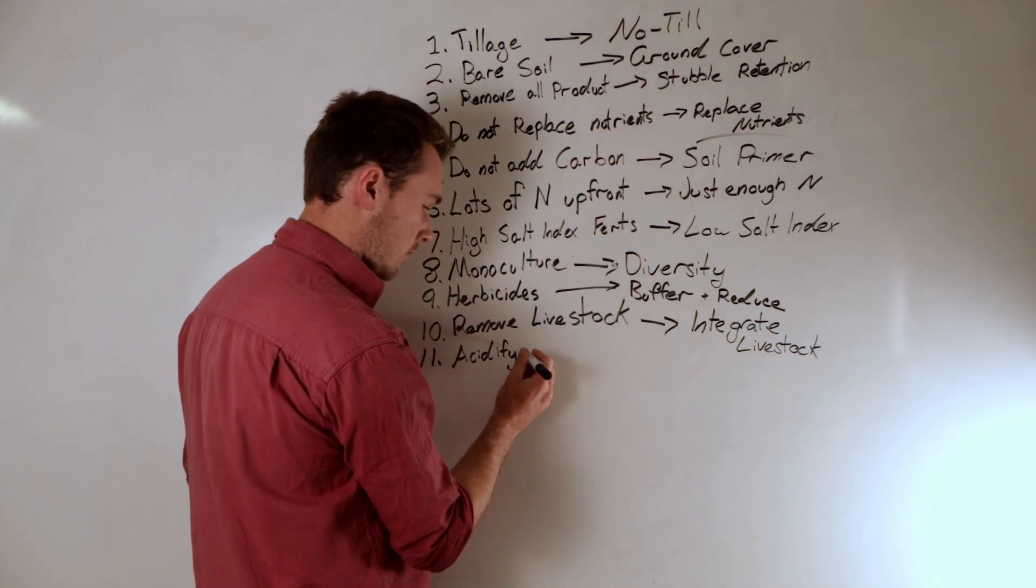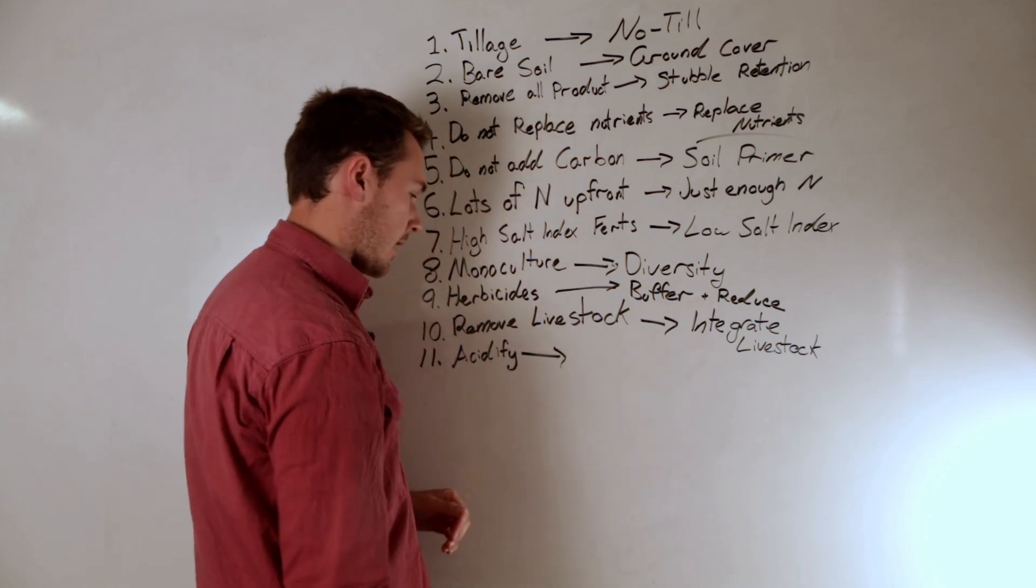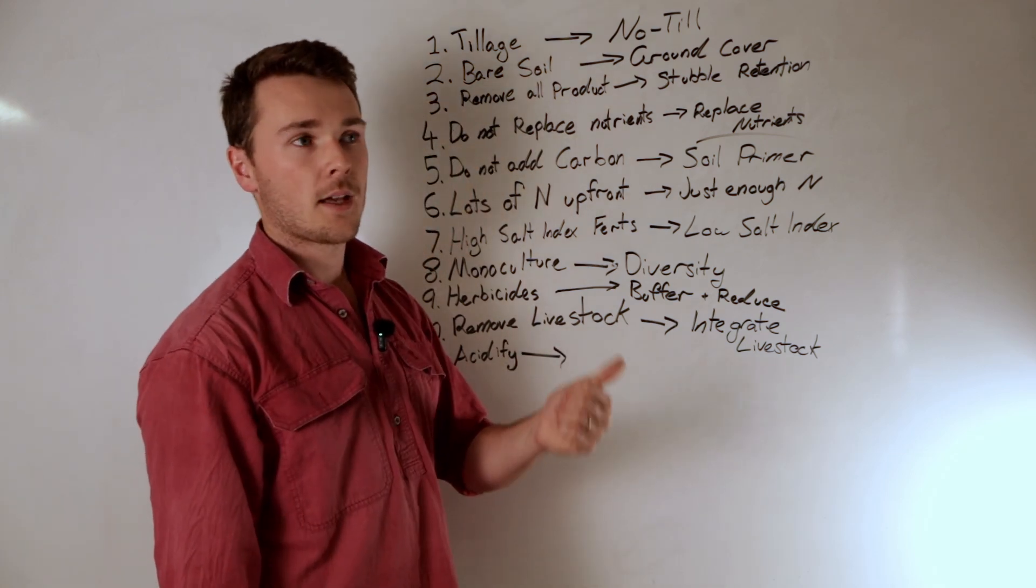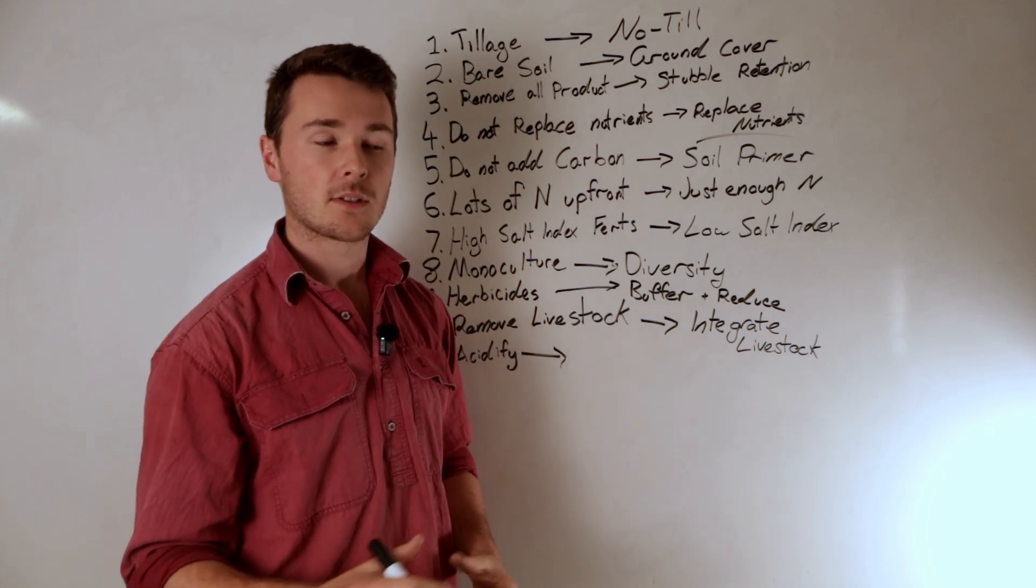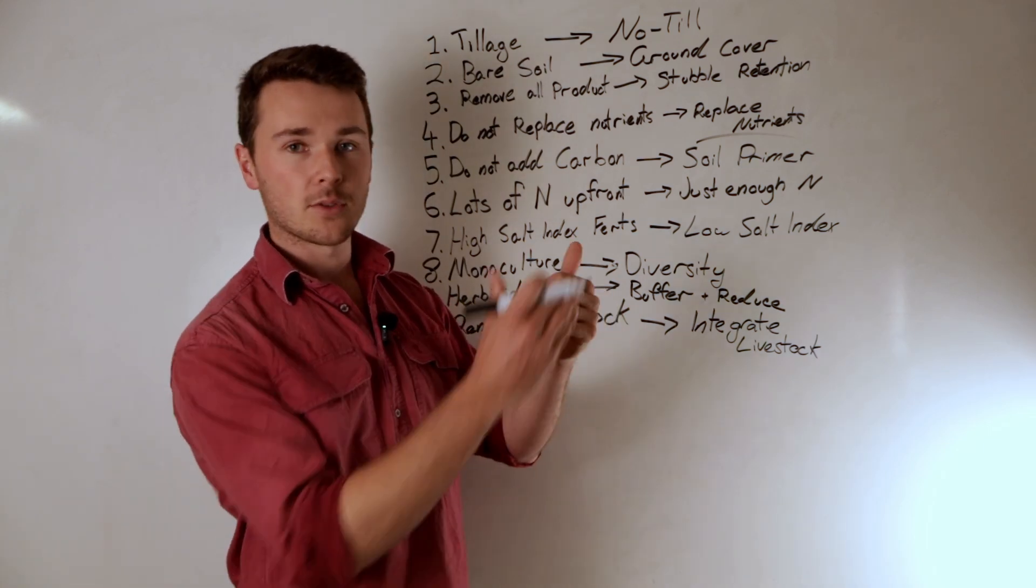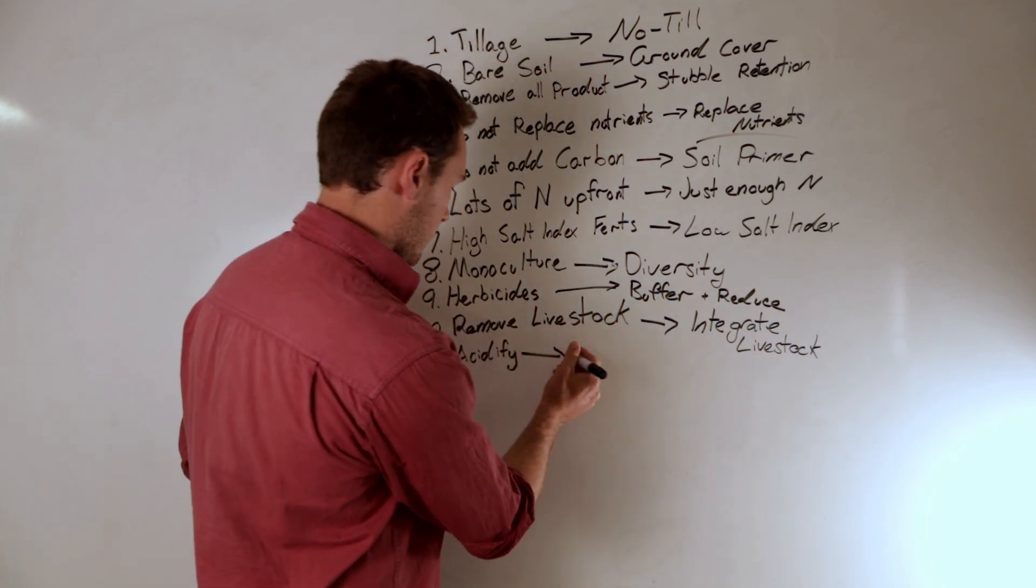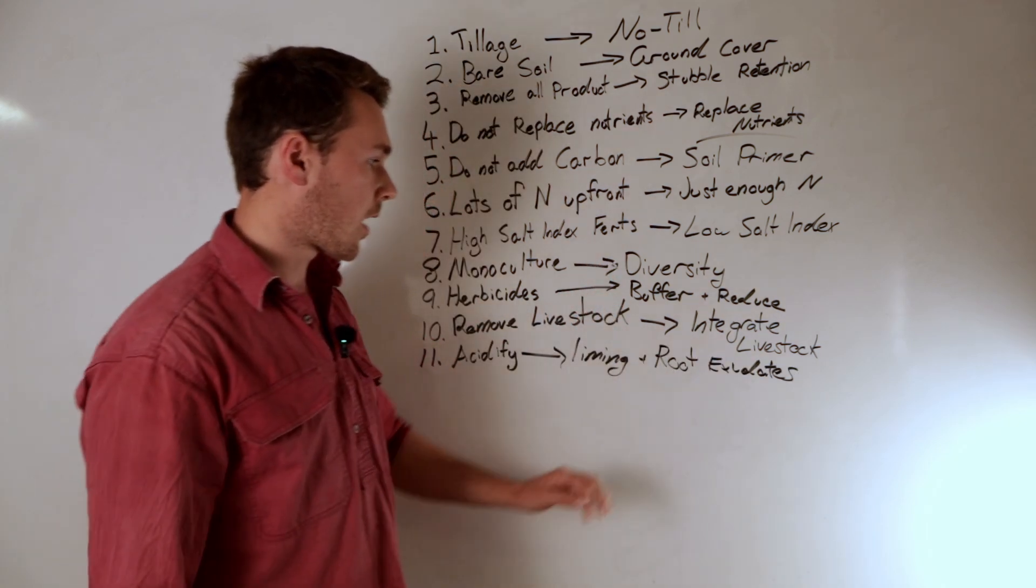Finally, we want to really control acidic soils, liming, as well as really focusing on increasing plant health using foliar applications and nutrition to increase the amount of root exudates to feed biology. So liming and root exudates are a great way to do that.